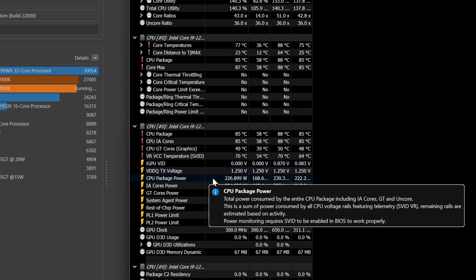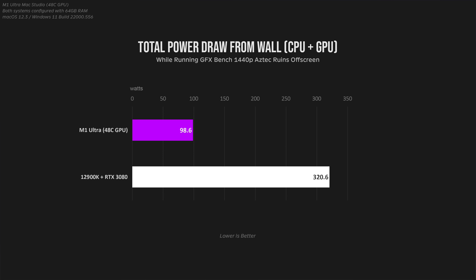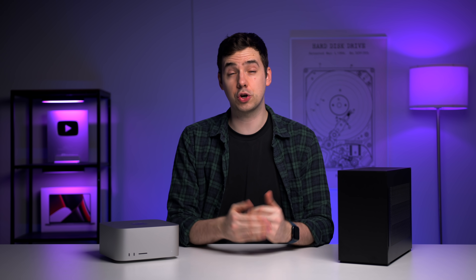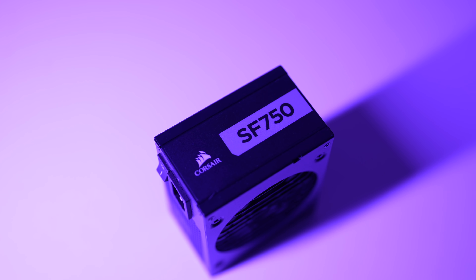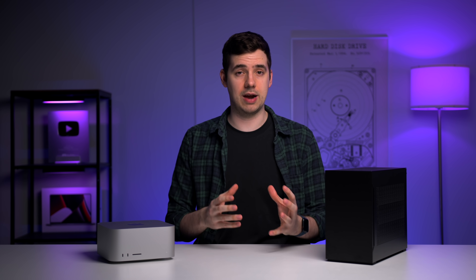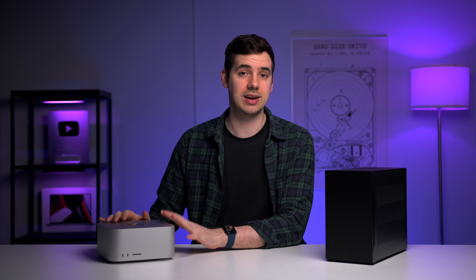Speaking of power, during the Cinebench test, the 12900K was using 226 watts versus just 60 watts for the M1 Ultra. For the GPU, here's the GFXBench benchmark while measuring total power draw from the wall. Remember that the M1 Ultra was able to score within about 10% of what the Intel and 3080 PC could achieve in both these benchmarks, but only needing about three times less power. So it looks like those graphs Apple were showing could be legitimate, at least in certain workflows — something I'm going to go into more detail on in a separate video. Electricity these days is not cheap, and seems to be getting more expensive. So if you're running this machine at full tilt all day, every day, in the long run you're actually going to save a significant amount of money on your electricity bill by going with a more efficient machine.